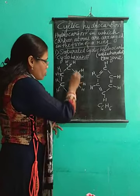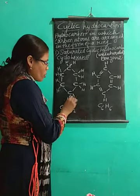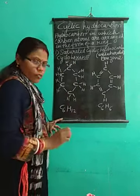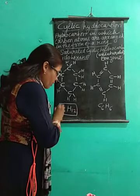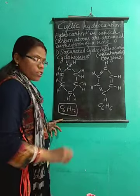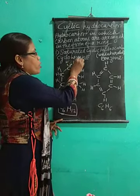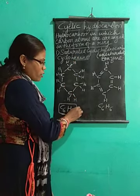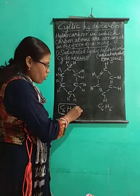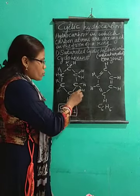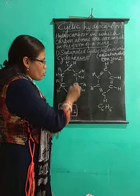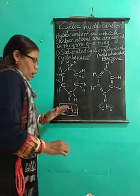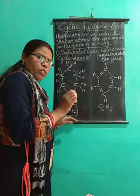Now count: it is six carbon atoms — C6 — and hydrogen: one, two, three, four, five, six, seven, eight, nine, ten, eleven, twelve — so twelve. The molecular formula of cyclohexane is C6H12. This is the structural formula, this is the molecular formula, and cyclohexane is the name.